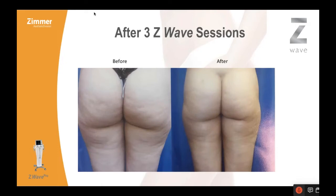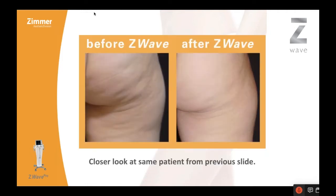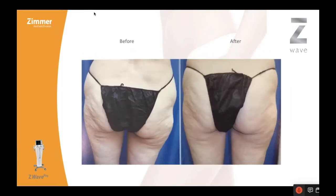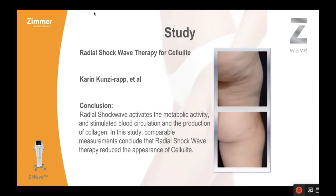Here are before and afters — same leg, before and after. This is a close-up showing the thigh buttock crease and how much better this can look after treatment. These patients are between six and ten treatments weekly. This is a great non-invasive result for cellulite because there's really not a whole lot else you can offer this patient. This is after three Z-Wave sessions on the abdomen. Dr. Karen Kunze-Rapp's study showed definitively that radial shock waves activated metabolic activity, stimulated blood flow, and the production of collagen — concluding that radial shock wave therapy reduced the appearance of cellulite, usually requiring between six and ten sessions.